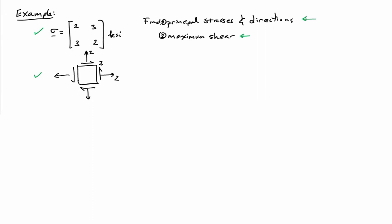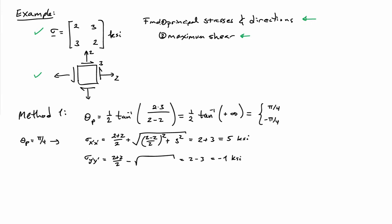We can use our transformation laws. If I use the transformation laws, the principal angle, theta p, is one-half the arc tangent of twice the shear, so that's going to be 6 ksi, divided by the difference of the normal stresses.